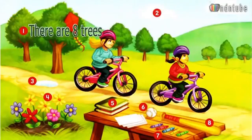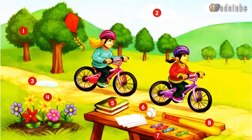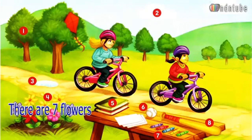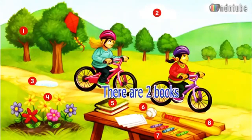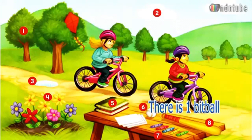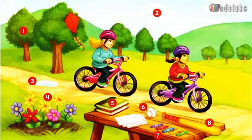Number 1: there are eight trees. Number 2: there are two clouds. Number 3: there's one puddle. Number 4: there are seven flowers. Number 5: there are two books. Number 6: there's one baseball. Number 7: there are five crayons. Number 8: there's one bat.